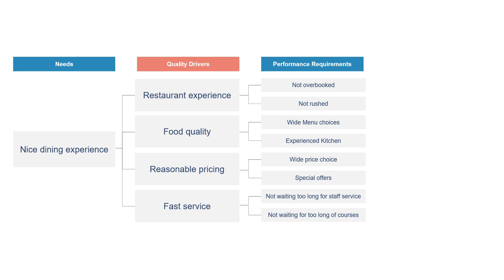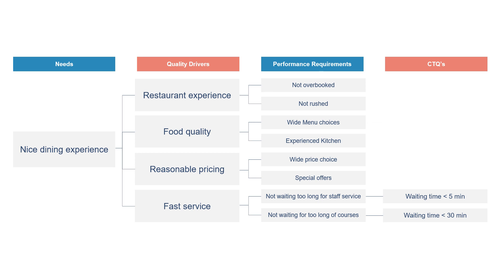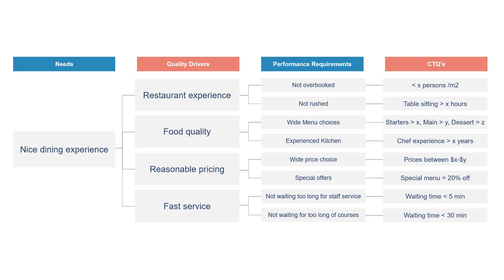Now that we have identified the performance requirements, we can start defining specific measurable targets for each of them. If we look at the performance requirements related to the quality driver fast service in our example, we might be able to translate not waiting too long for staff service into waiting time less than five minutes, and not waiting too long for our courses into less than 30 minutes. Here in this video, you might want to press pause and try to have a closer look at the details of the example I have provided.